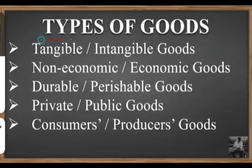Examples of intangible goods include education, medical consultancies, and renditions of music. These are services provided — they are invisible, have no physical existence, cannot be measured, are untouchable, and exchange is not possible. So the difference is: tangible goods are visible, measurable, touchable and exchangeable; intangible goods are invisible, have no physical existence, cannot be measured, are untouchable and not exchangeable.